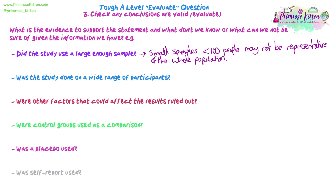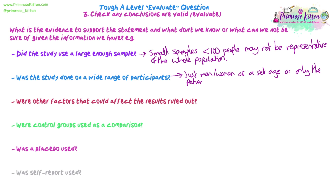Was the study done across a wide range? It's not just about how many participants were in the trial, but also what people did they get in. Was it just men? Was it just women? Was it just patients who had the disease? Did they try on any healthy people to check for side effects? If it's a mice study, you can only really apply it to mice. If it was a set age group, you can't just apply conclusions to everybody.